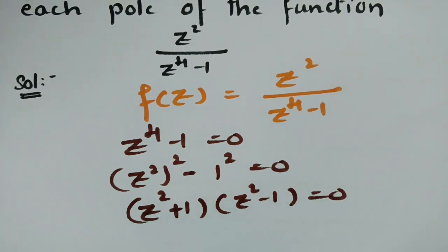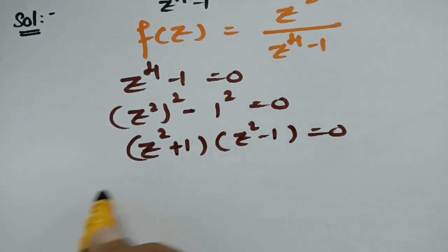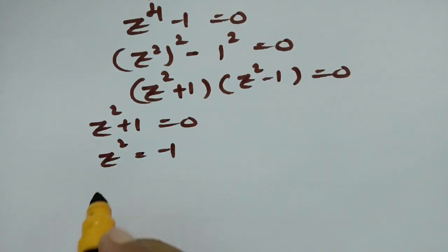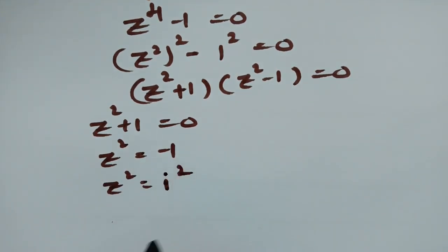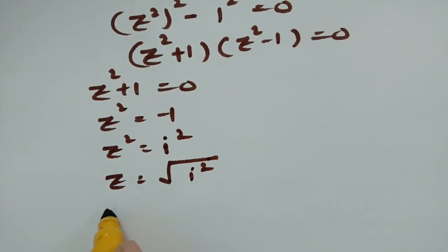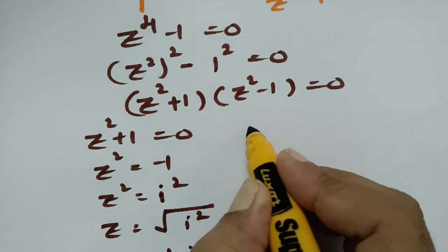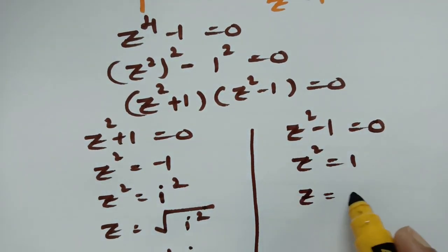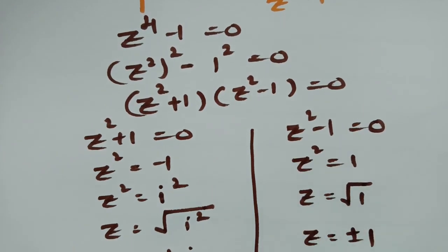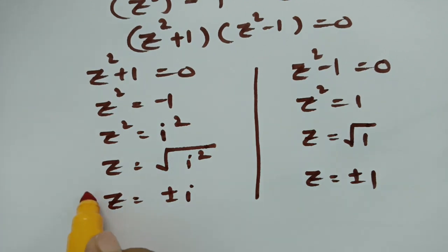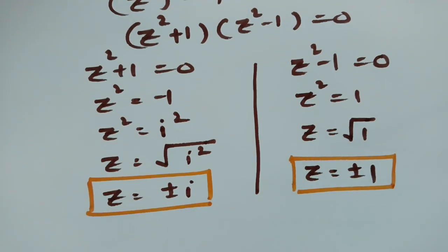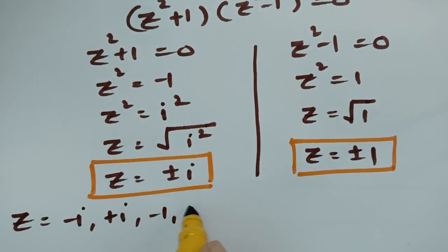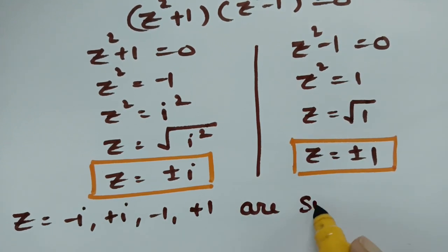From z² + 1 = 0, we get z² = -1 = i², so z = ±i. From z² - 1 = 0, we get z² = 1, so z = ±1. Therefore the pole values are z = ±i and z = ±1, and all four — z = -i, +i, -1, +1 — are simple poles.